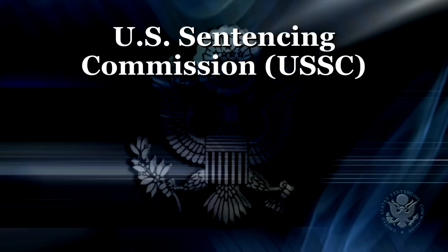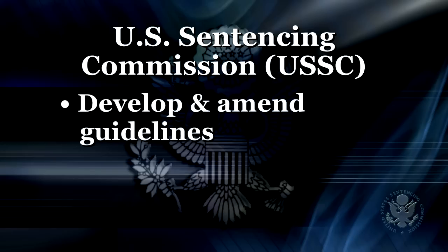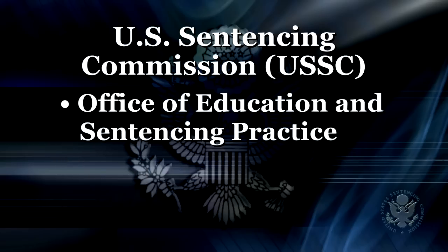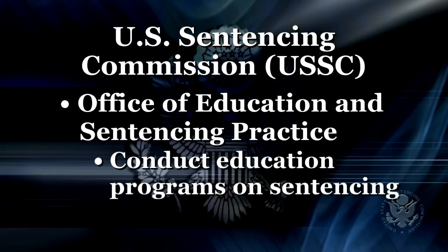The principal purposes of the Commission are: one, to establish sentencing policies and practices for the Federal courts, including guidelines to be consulted regarding the appropriate form and severity of punishment for offenders convicted of Federal crimes; two, to advise and assist Congress and the Executive Branch in the development of effective and efficient crime policy; three, to collect, analyze, research, and distribute a broad array of information on federal crime and sentencing issues; and four, serve as an informational and educational resource for Congress, the Executive Branch, the courts, criminal justice practitioners, the academic community, and the public.